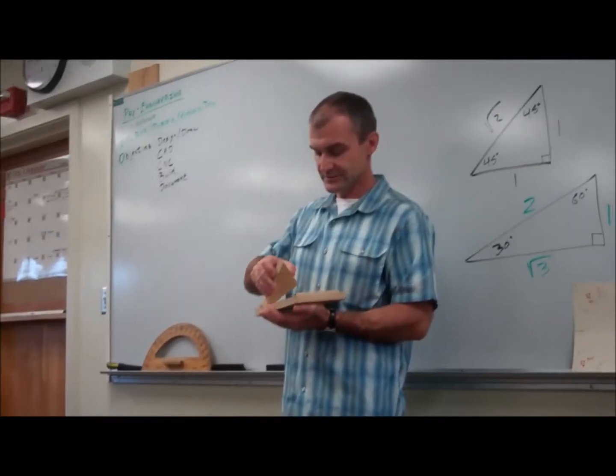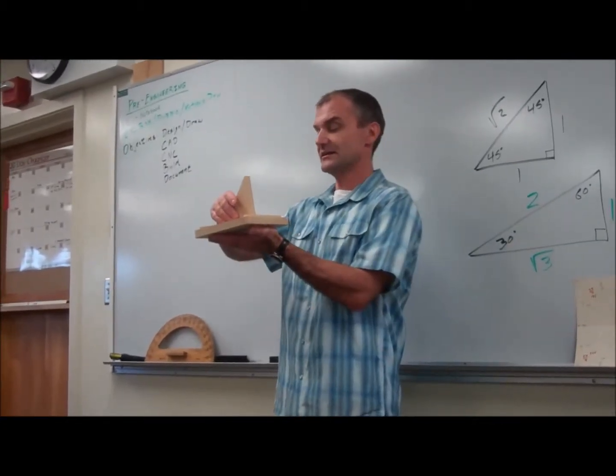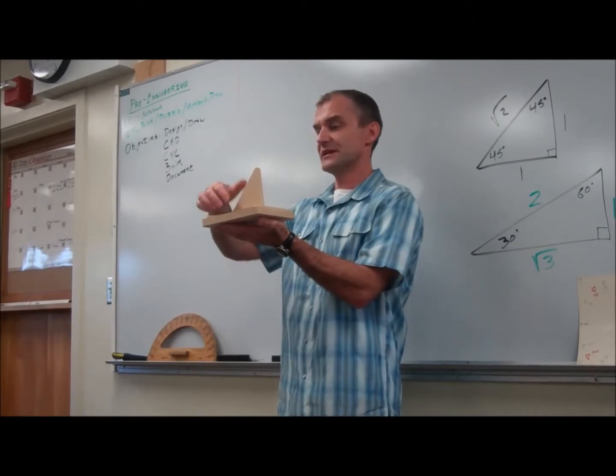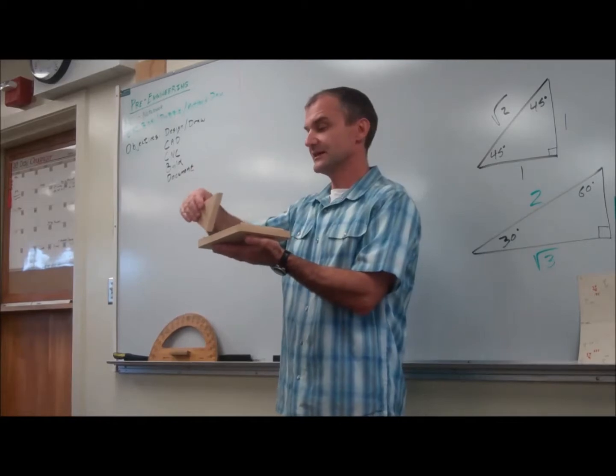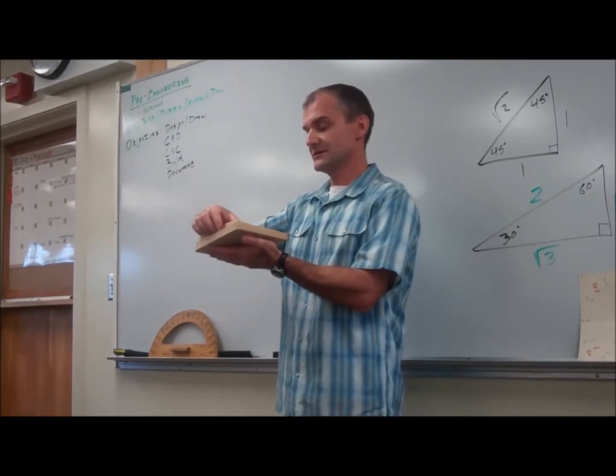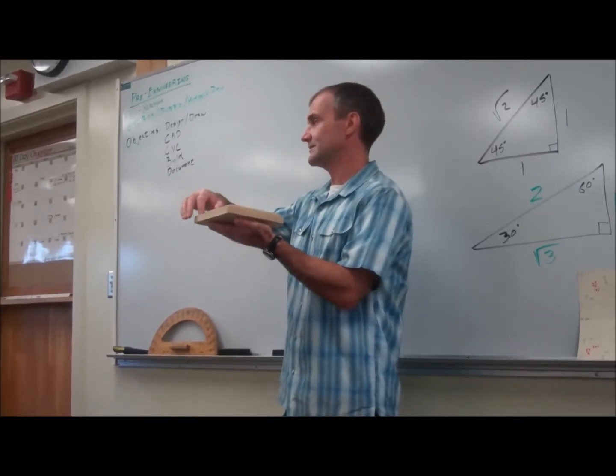Every one of the triangles is isosceles right, and that ratio is always going to be the same. It's going to be a ratio of one to one to root two. Some of them, the legs are on the outside and they're an integer, and some of them, the hypotenuse is on the outside.